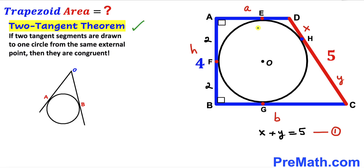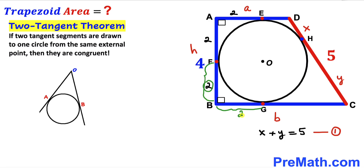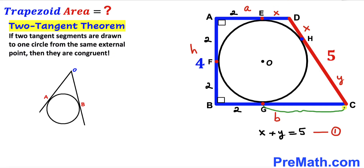Applying the two tangent theorem to our problem: segment AE equals segment AF — since AF is 2, segment AE is also 2 units. Segment BG equals segment BF — since BF is 2, BG is 2 units as well. Segment ED equals segment DH — since DH is x, ED is x. And segment CG equals segment CH — since CH is y, CG is y.